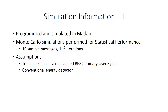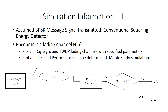For simulation, programming is performed within MATLAB, and Monte Carlo simulations are performed to determine several key statistical characteristics. Assumptions have to be made to compare the performance of this simulation to the findings of the author. A 10-sample binary message is used for transmission, and the conventional energy detector previously discussed is present at the receiver. The binary message is transmitted through a fading channel with different fading parameters specified in the paper by Allen and others, and based on the energy value, hypotheses H0 or H1 are determined.